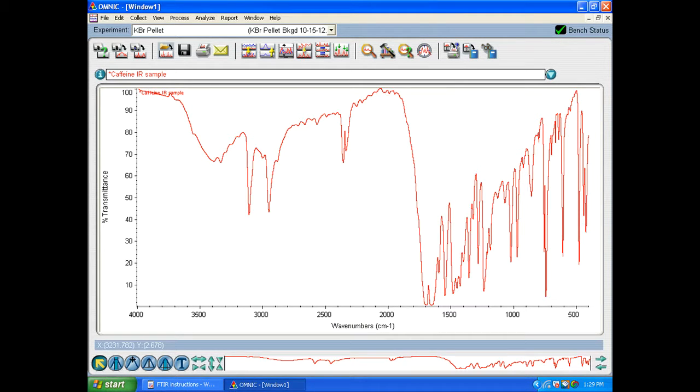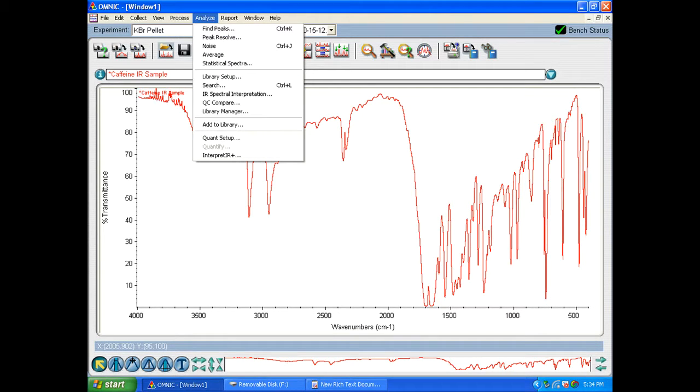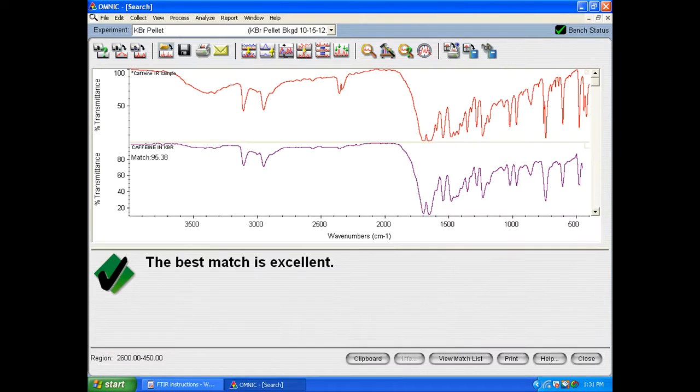Now if you're in the forensics class and you're wanting to go ahead and look up whatever compound it is you have, all you have to do is go to analyze and then you go to search. The library that this OMNIC program has access to will try and match the spectra to the closest thing possible. So in this case we get this where the software is showing us yes it found a match that this is caffeine in KBR and the best match is excellent.